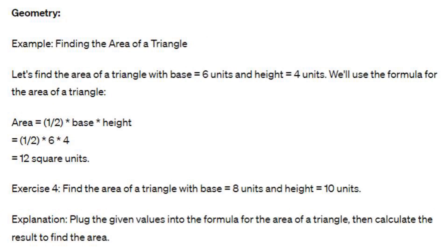Geometry example: Finding the area of a triangle. Let's find the area of a triangle with base equals 6 units and height equals 4 units. We'll use the formula for the area of a triangle. Area equals one-half base times height, equals one-half times 6 times 4, equals 12 square units. Exercise 4: Find the area of a triangle with base equals 8 units and height equals 10 units. Explanation: Plug the given values into the formula for the area of a triangle, then calculate the result to find the area.